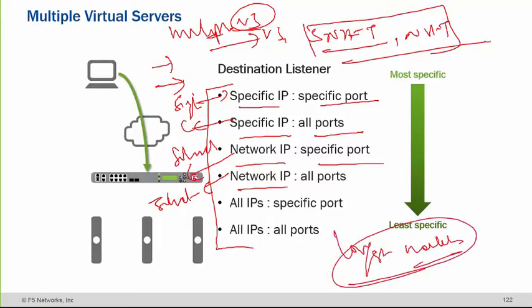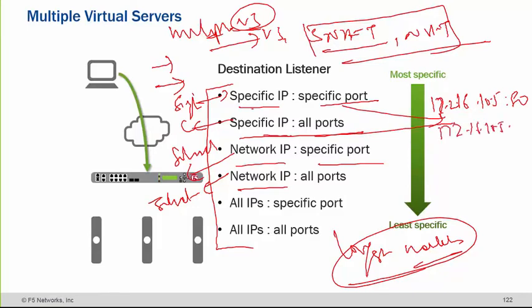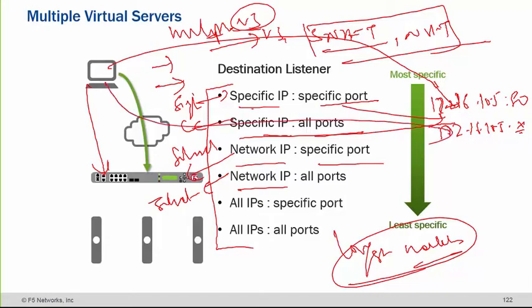When I say longest match, it means if any packets — let's say the example of specific IP 172.16.10.5 port 80 for this one, and the same IP 10.5 with star for all ports — if any client is making a request to port 80, this virtual server will be used. If any client makes a request other than port 80, then the other one will be used. This is the way of longest match first. Because if you are making a request to 80, this virtual server has the longest match, so it will be preferred first, then it will go to the other one.